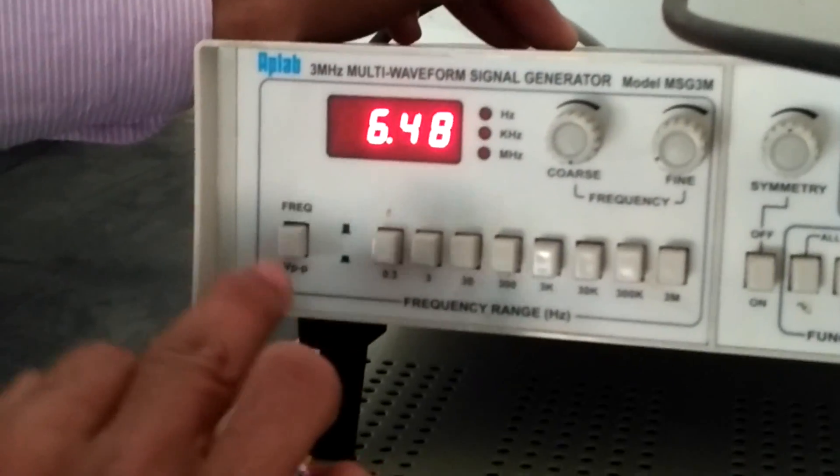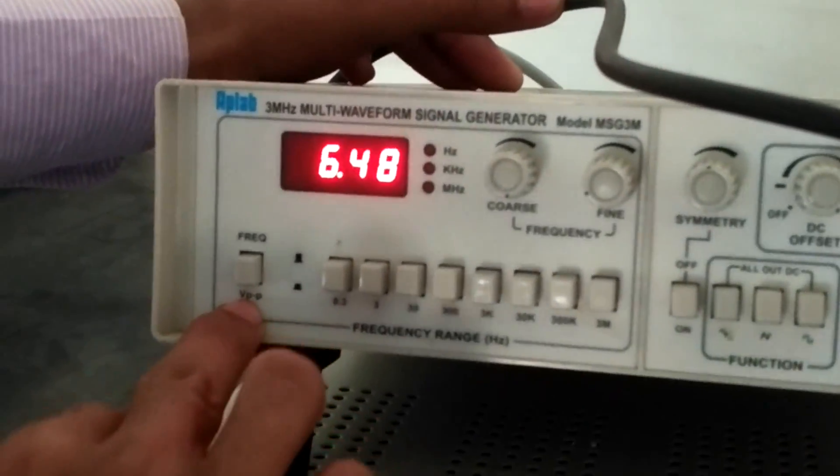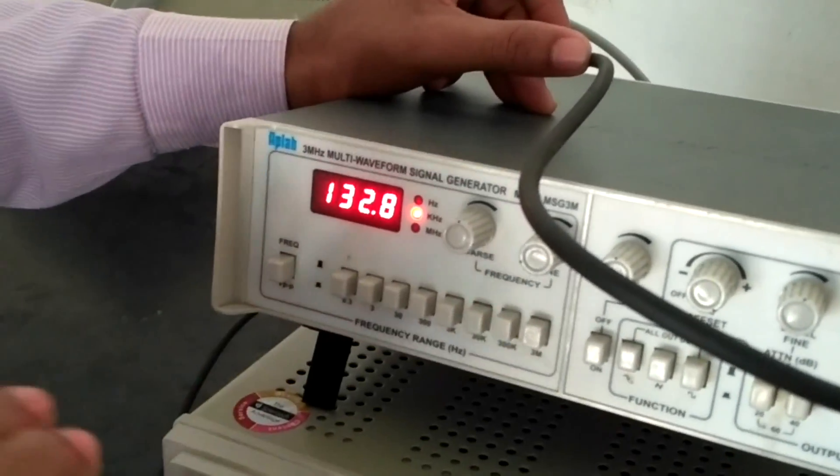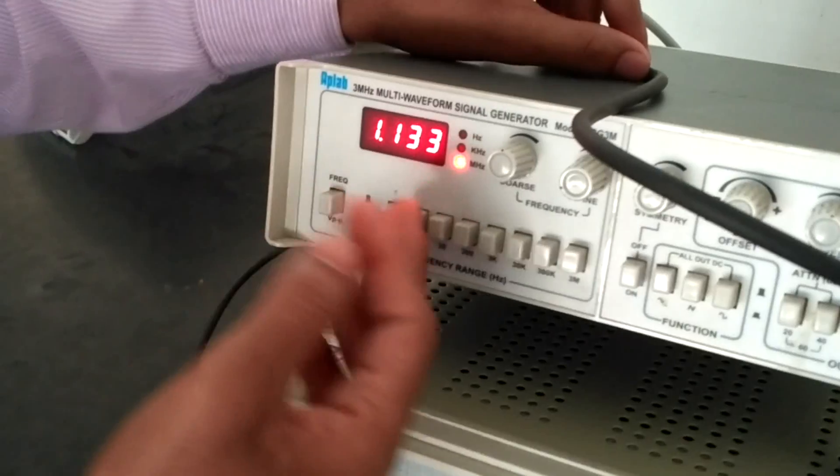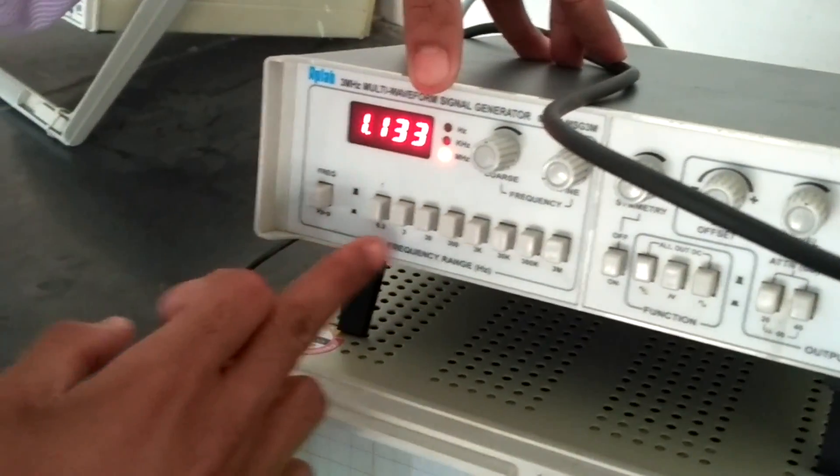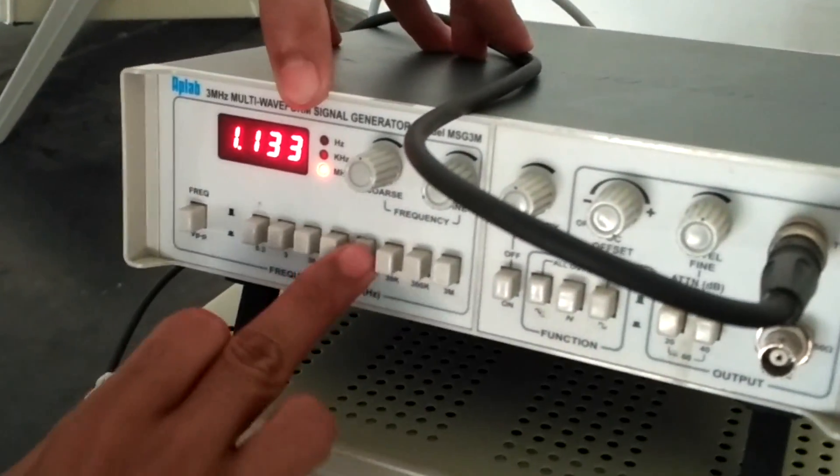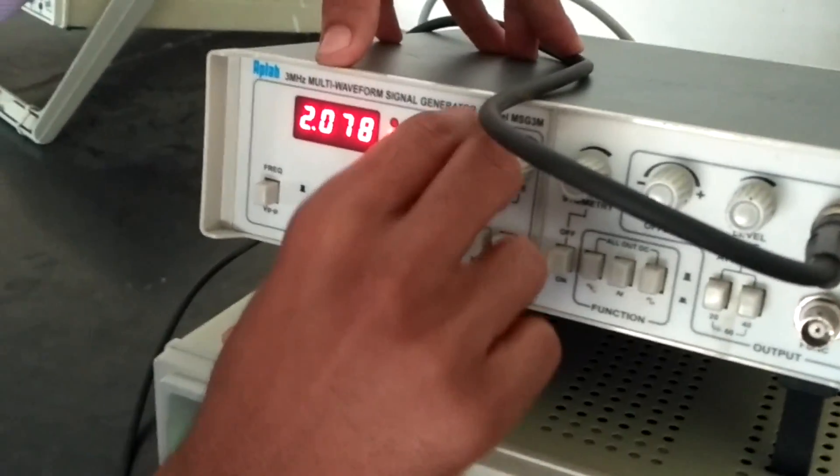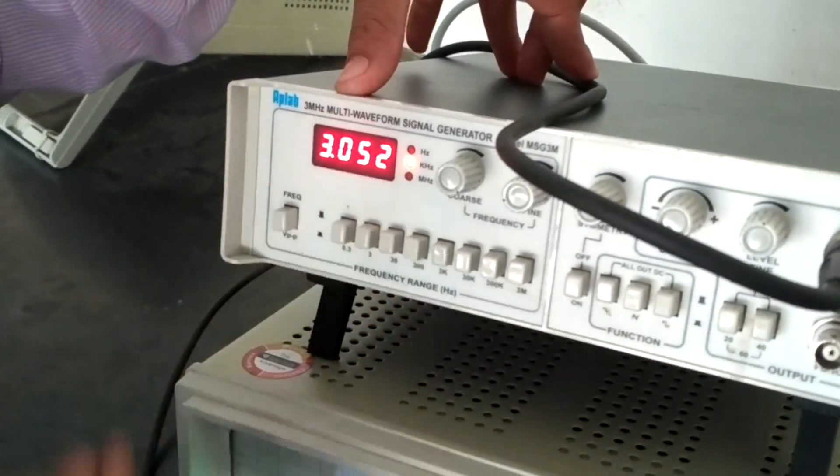This is for frequency. We can change the amplitude using this knob, and by switching again we will get the frequency. As it is in megahertz, we can change the range through kilohertz. As I switch it to kilohertz, I can increase or decrease its value using this knob.